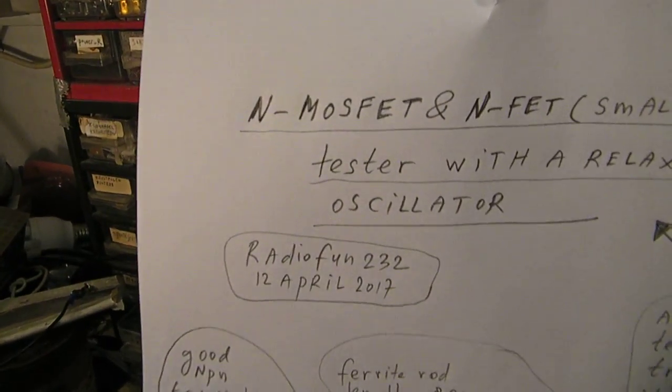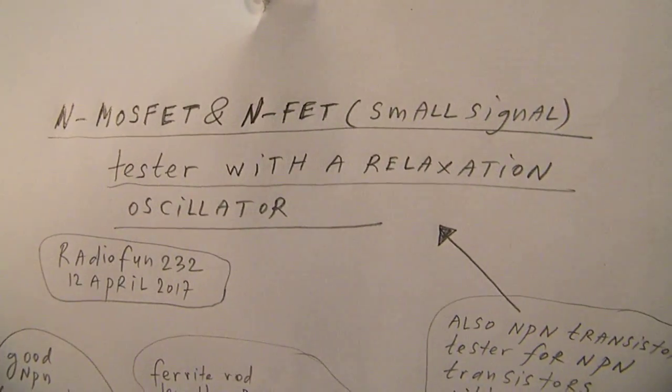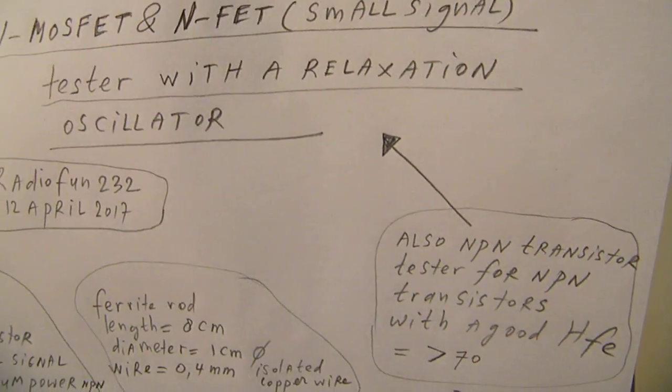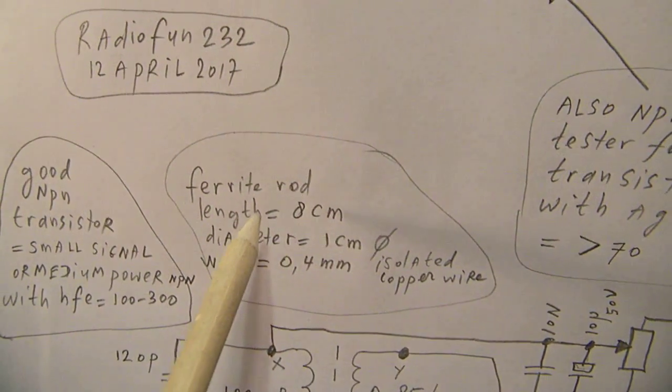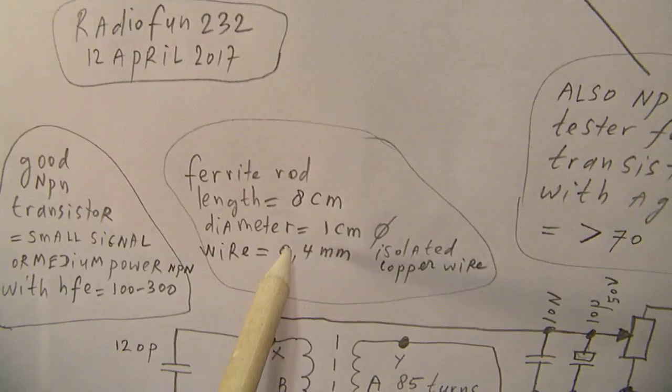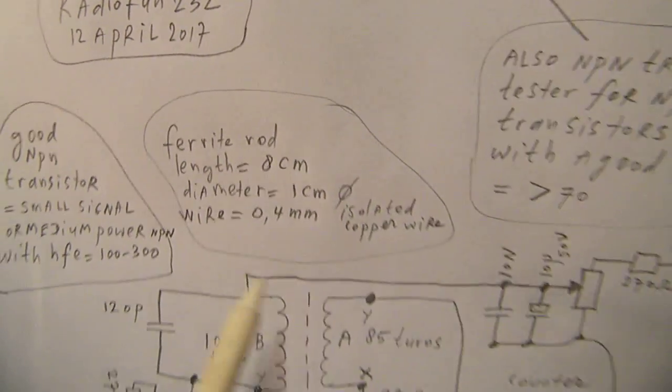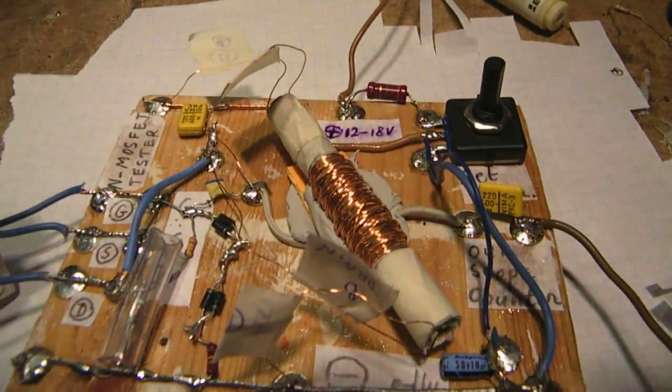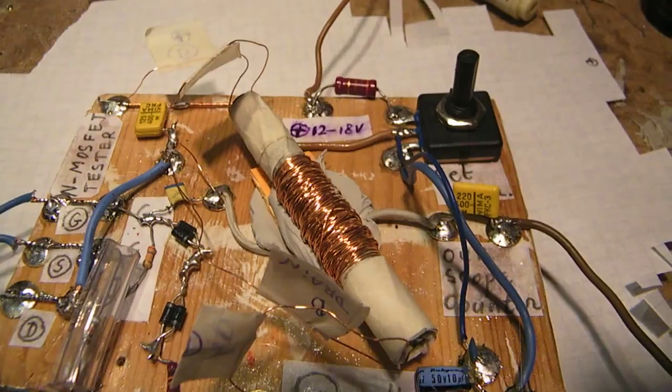So I pan over the circuit somewhat. I hope this video will not be too long. The ferrite rod has a length of 8 cm, diameter 1 cm, the wire is 0.4 mm, but that's not very critical. You can also use much thinner wire.